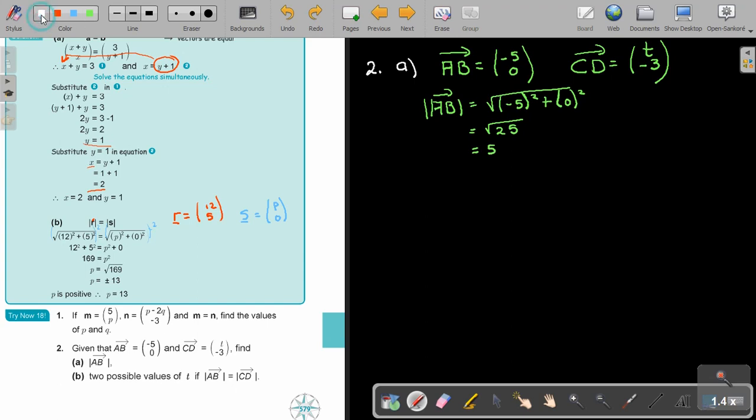And then number B. 2 possible values of T if 2 possible. AB equals CD. So the first thing that we have to do is we have to find the magnitude of CD. And that will just be T squared plus negative 3 squared. So that is going to be T squared plus negative 3. We can simplify that by saying 9.